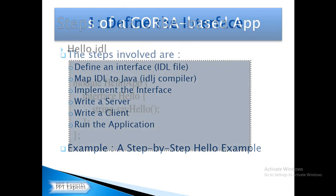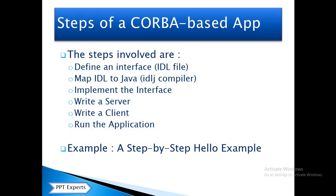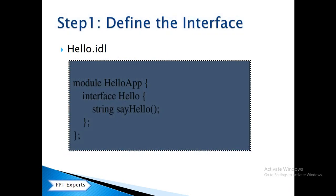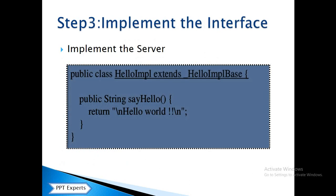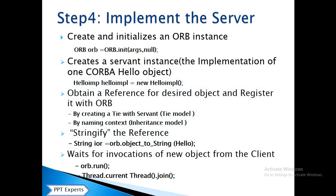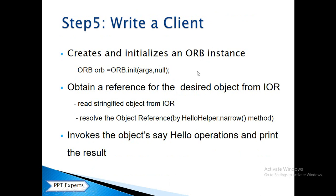To create a CORBA application: the CORBA application is created by defining an interface using an Interface Definition Language, mapping the IDL with Java, implementing the interface, writing a server side, writing a client side, and running the application. For a step-by-step Hello World application: first create an interface, then map the Interface Definition Language to Java, which will generate stubs, skeletons, hello.java, helper.java, holder.java, and operations.java files. Then implement the interface for the server side: initialize the object, initialize the implementation, stringify the references, and run the thread.